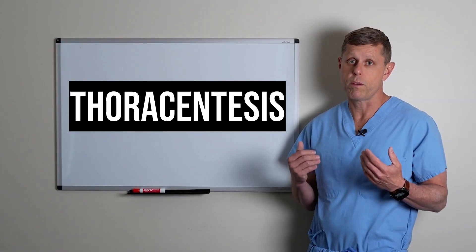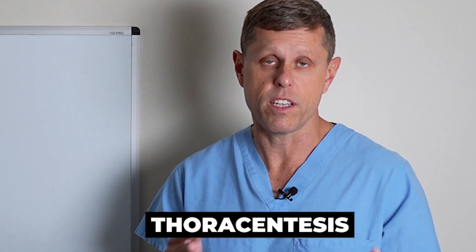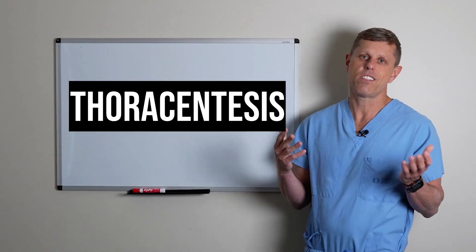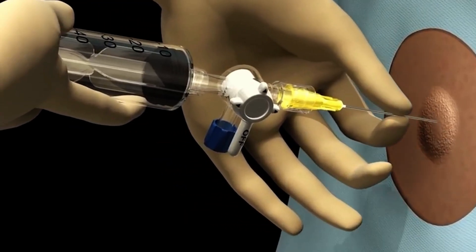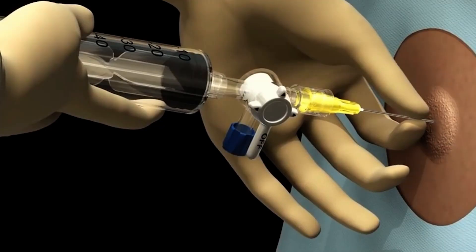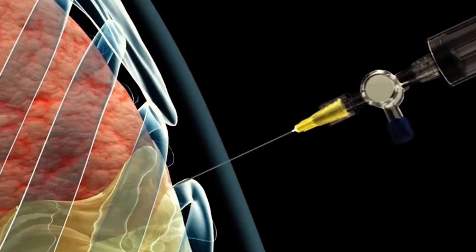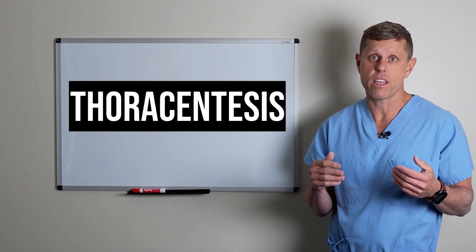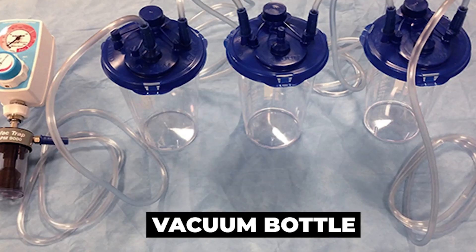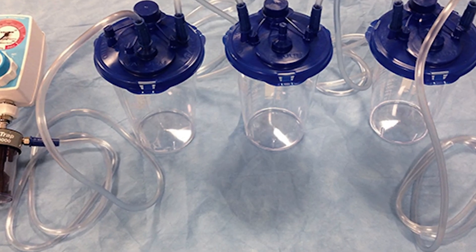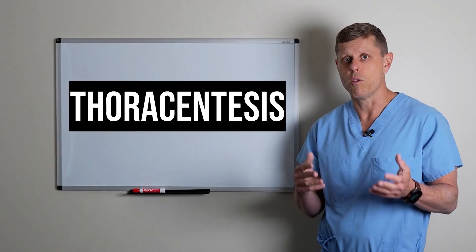One of the most important steps in relieving the symptoms and finding out what is the cause is to do this procedure called thoracentesis. Thoracentesis is a very simple procedure—essentially we insert a needle in the pleural space in the area of the fluid, and then connect this needle to a vacuum bottle or suction device to remove the fluid.